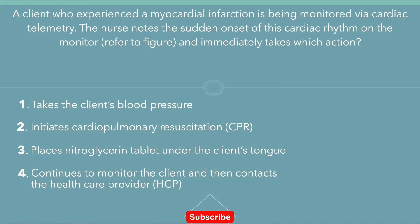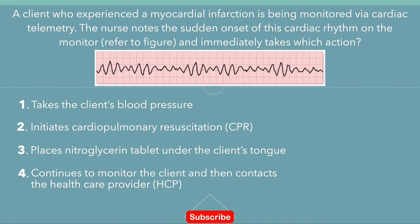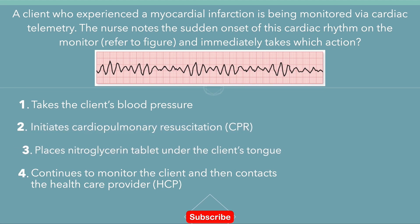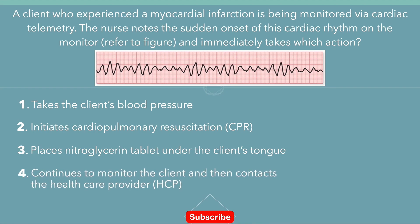A client who experienced a myocardial infarction is being monitored via cardiac telemetry. The nurse notes the sudden onset of this cardiac rhythm on the monitor and immediately takes which action? Option 1: takes the client's blood pressure. Option 2: initiates cardiopulmonary resuscitation. Option 3: places a nitroglycerin tablet under the client's tongue. Option 4: continues to monitor the client and then contacts the health care provider.